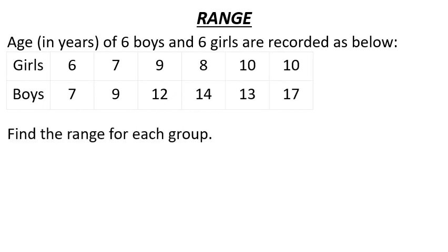Here we have a table showing a frequency distribution. The age in years of 6 boys and 6 girls are recorded. Find the range of each group. The minimum value for one group is 10 and the minimum value for the other is 6.